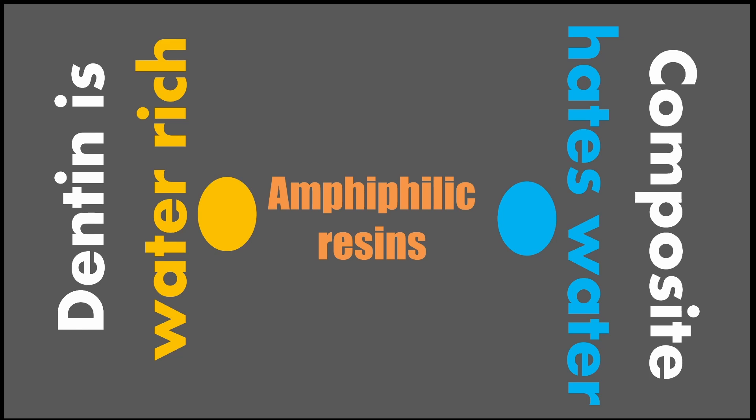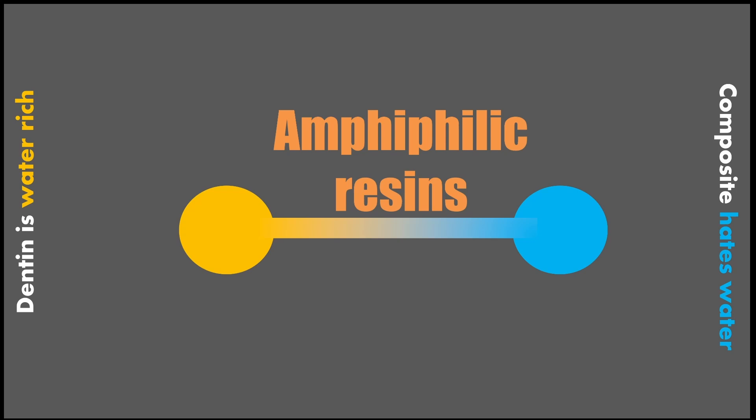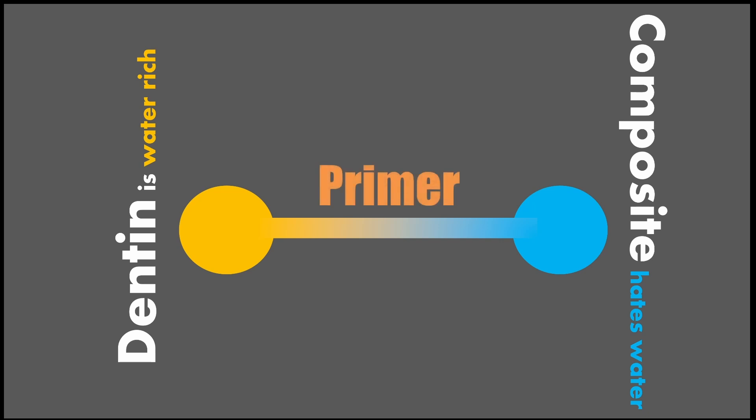This led to the introduction of newer materials called amphiphilic resins. Amphiphilic resins have two ends: one end is hydrophilic, meaning it likes water, and the other end is hydrophobic, meaning it hates water. Both these ends are present in a single material. When applied onto the surface of dentine, the hydrophilic ends bond to the water-rich dentine, and the hydrophobic ends remain free to bond with the hydrophobic composite placed on top. In simple terms, these amphiphilic resins are called primers. All primers used in dentistry are amphiphilic resin materials.